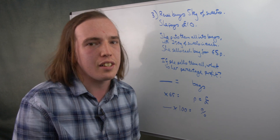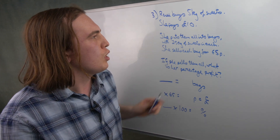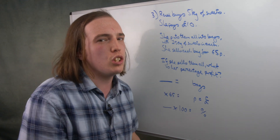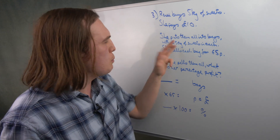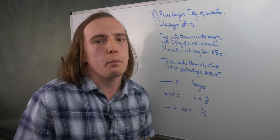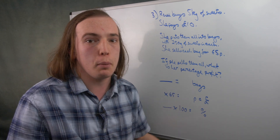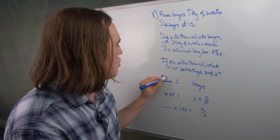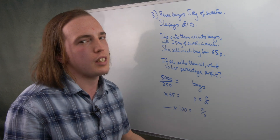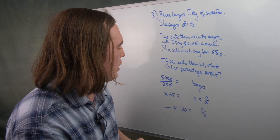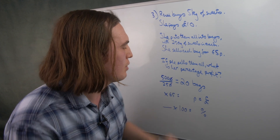Now let's get to the numbers. She bought 5 kilograms of sweets and sold them in batches of 250 grams. Both are measurements of the same thing but in different units, so let's put it all in grams. There are 1,000 grams in a kilogram, so there are 5,000 grams in 5 kilograms. To find how many bags she has, we do 5,000 divided by 250. On a non-calculator paper, we can simplify this: eliminating the factor of 10, 25 goes into 500 twenty times. So she sells 20 bags.